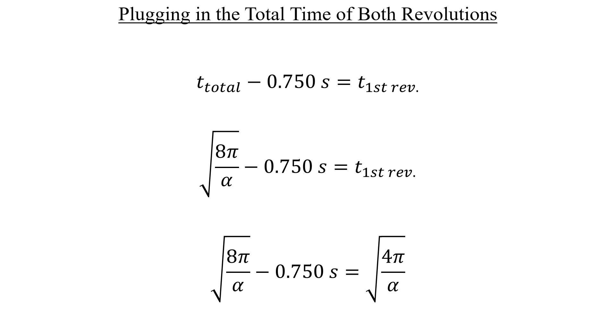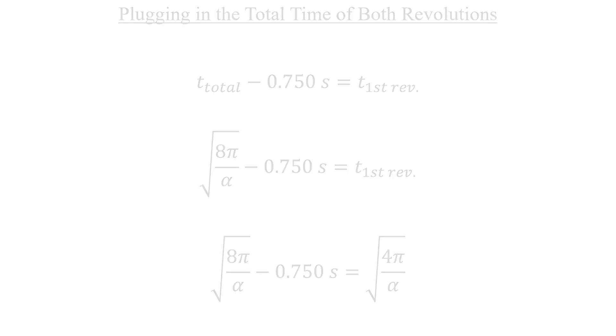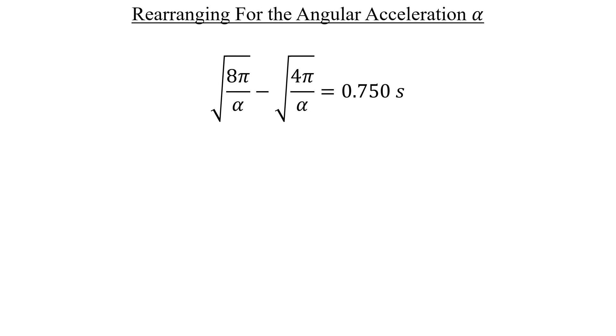We want the angular acceleration here. So let's switch the positions of this 0.750 seconds on the left with the square root of four pi over alpha on the right. Next, we can factor out the square root of pi over alpha from both terms on the left. And this is where you need to be careful. Notice that we have the square root of eight minus the square root of four, not the square root of eight minus four.